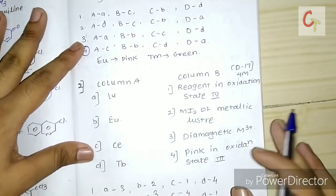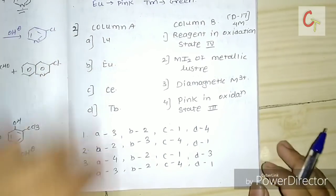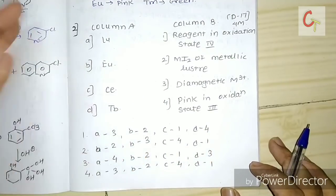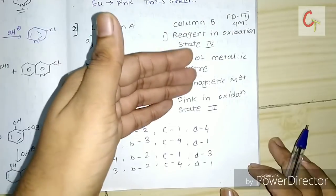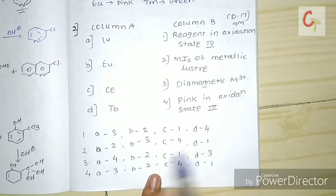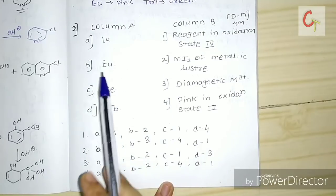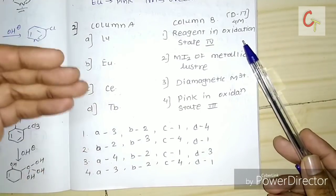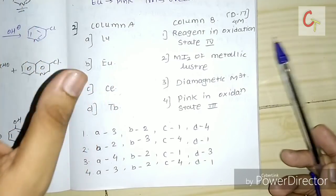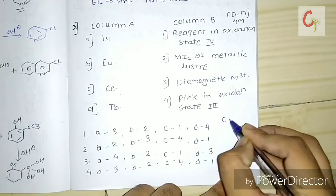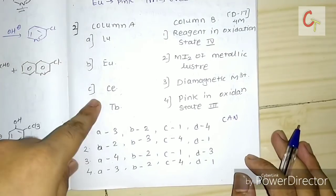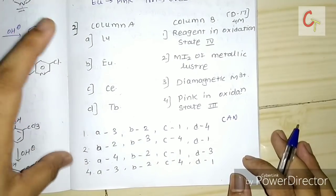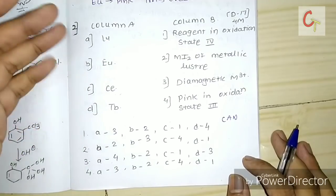This is also a 4-mark question from f-block. We have to match which metal was used in which application. The metals given are lutetium, europium, cerium, and terbium. Generally, cerium is used as an oxidizing agent in organic chemistry — specifically cerium ammonium nitrate — so C should correspond to first. Since C appears in options 1 and 2, our answer is narrowed to first and third.